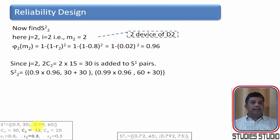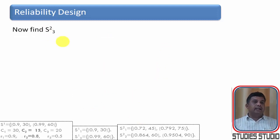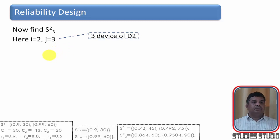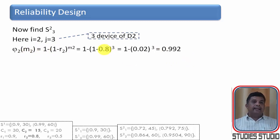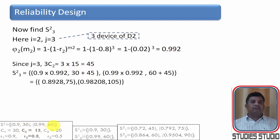For S_{2,3} — three devices of D2 — the reliability is 1 − (1 − 0.8)^3 = 0.992 and the cost is 15 × 3 = 45. Combining with S_1: (0.9 × 0.992, 30+45) = (0.8928, 75) and (0.99 × 0.992, 60+45) = (0.98208, 105).